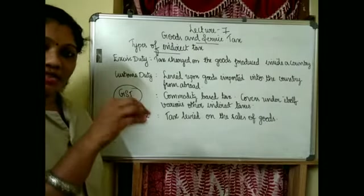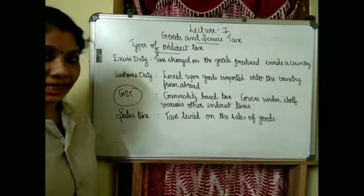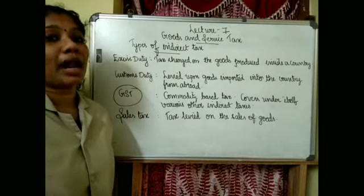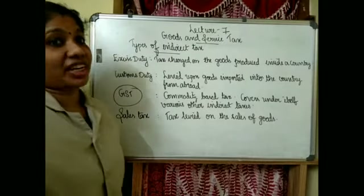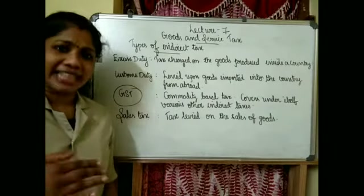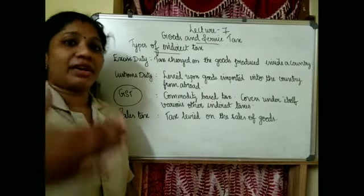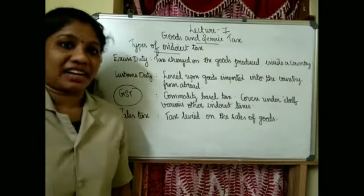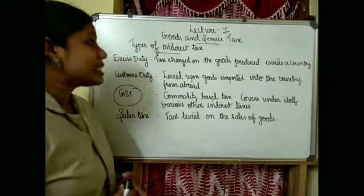When we produce goods and transfer them to others, the tax added at that point is excise duty. We call the excise duty department the Central Excise department.